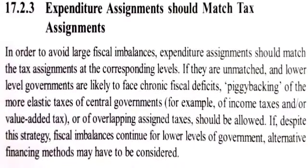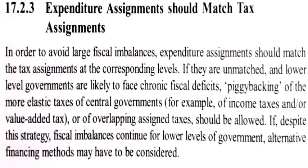Three, expenditure assignment should match tax assignment. In order to avoid large fiscal imbalances, expenditure assignment should match the tax assignment at the corresponding level. If they are unmatched, lower-level governments are likely to face chronic fiscal deficits. Piggybacking of the more elastic taxes of central government — for example, income taxes and/or value-added taxes — or overlapping assignment in taxes should be allowed. If despite this, fiscal imbalances continue at lower levels of government, alternative financing methods may have to be considered.